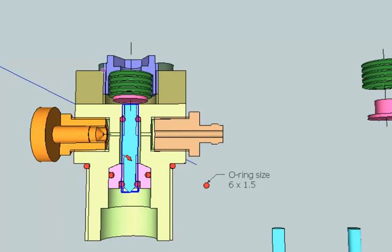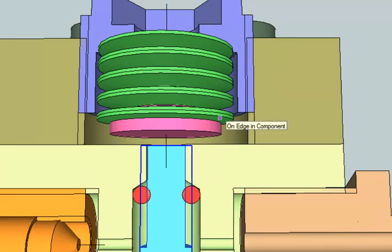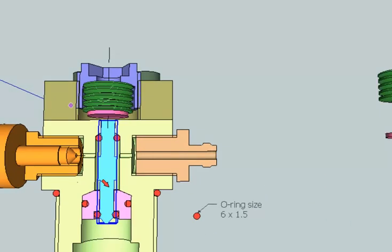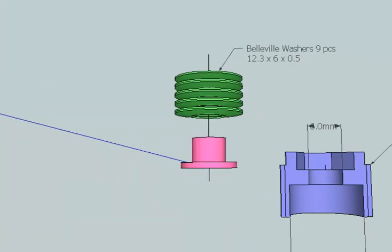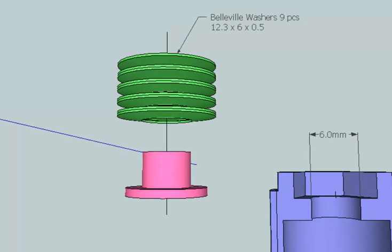And what pushes it down is this stack of Belleville washers up here. I'm using 9 here. Belleville washers, 9 pieces. Outside diameter is 12.3, inside diameter is 6, thickness is 0.5.